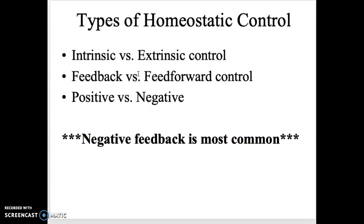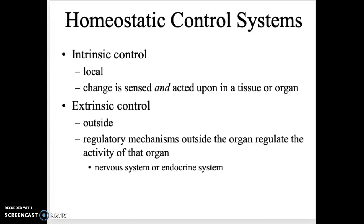There are a few different types of homeostatic control systems — we'll go through each on their own. There are two types: intrinsic and extrinsic control. Intrinsic control happens locally within an organ — the change and the response both happen within that one specific location. Extrinsic control happens outside, making it more of a systemic response where the change might be sensed and acted upon from a different system.